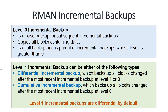Incremental backups can be level 0 or level 1. Level 0 backup is a base backup for subsequent incremental backups. It copies all blocks containing data, so an incremental level 0 backup is also effectively a full backup, and is the parent of any incremental backup whose level is greater than 0 — meaning it is the parent of every level 1 backup.